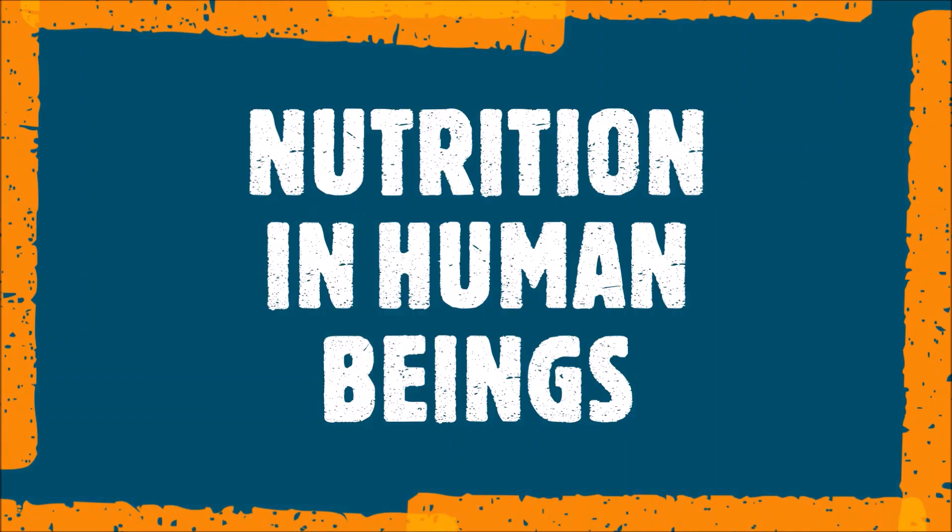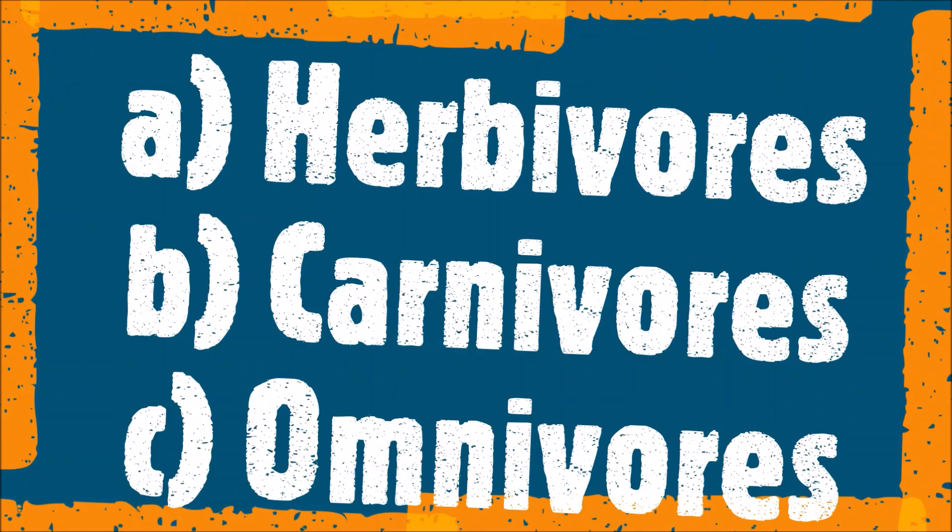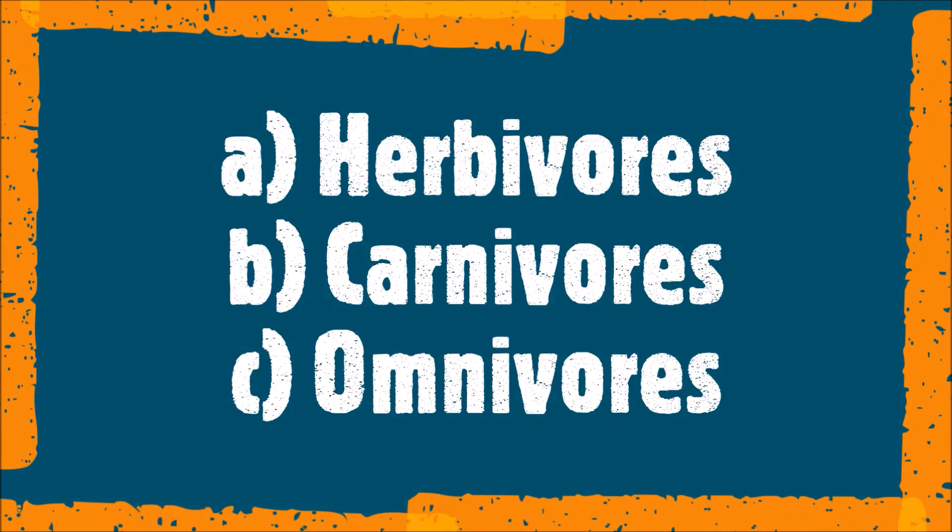Now let's learn about nutrition in animals. Based on food habits, holozoic animals are classified into herbivores, carnivores, and omnivores. The steps involved in the process of nutrition begin with the first step: ingestion.